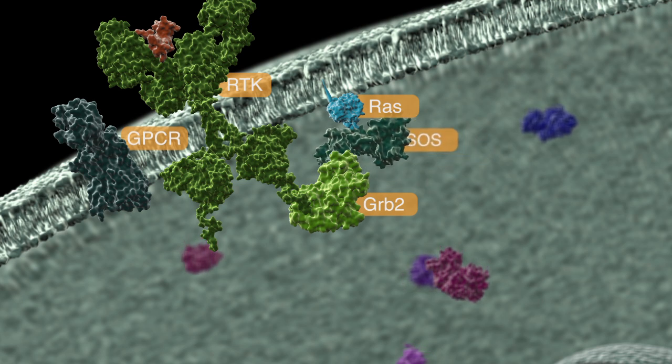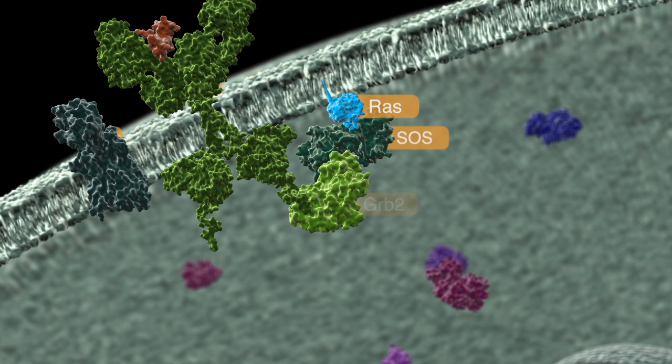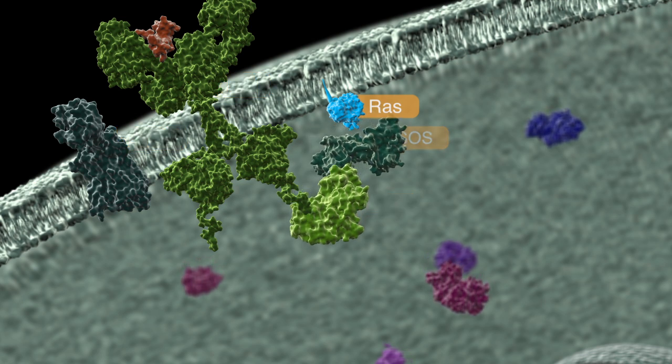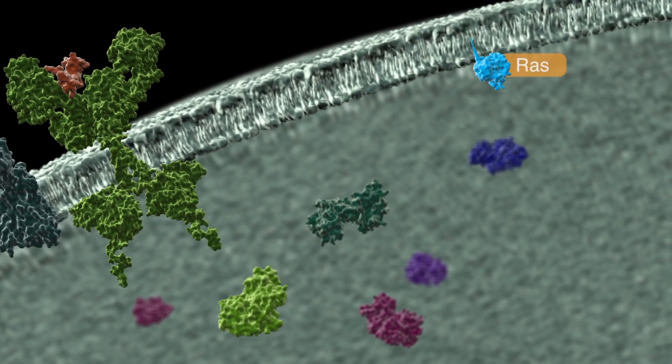GRB2 recruits the guanine nucleotide exchange factor, SOS, co-localizing it with RAS at the plasma membrane. GDP is exchanged for GTP, and RAS is activated.